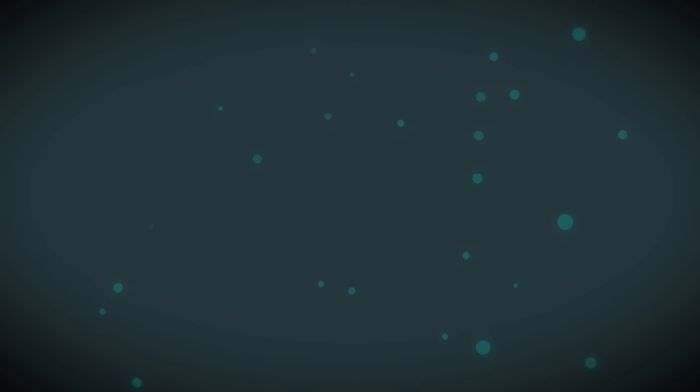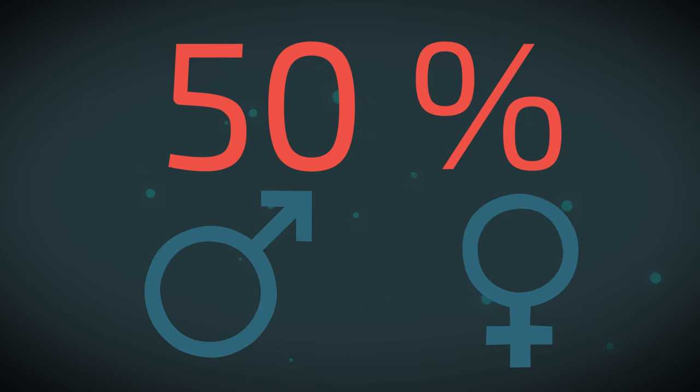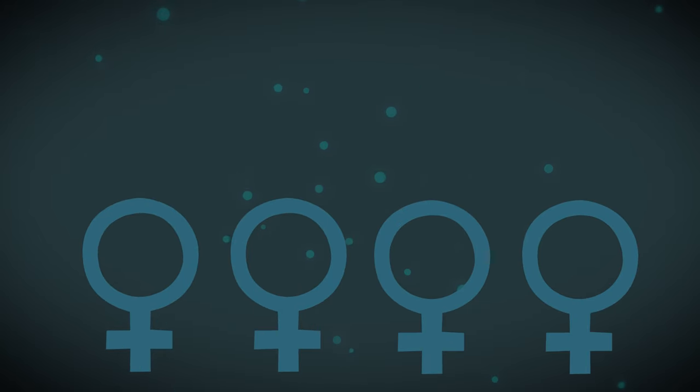From the Punnett square, we would expect 50% of the offspring to be male and 50% to be female. But the actual outcomes may be different. One couple could for example end up with four girls.